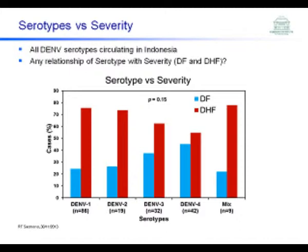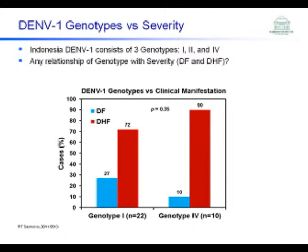We also have data on patient severity and would like to know whether there is a relationship between serotype and severity of disease. The data shows some differences in each serotype in generating different clinical manifestations — dengue fever versus DHF — but the data is not statistically significant.